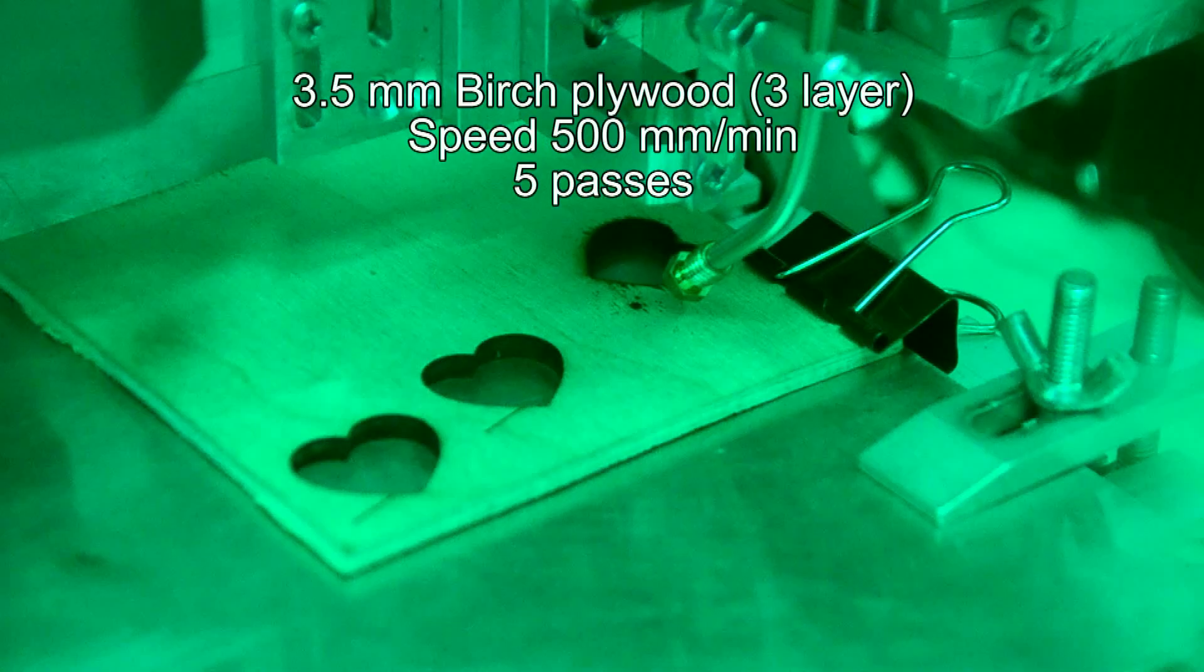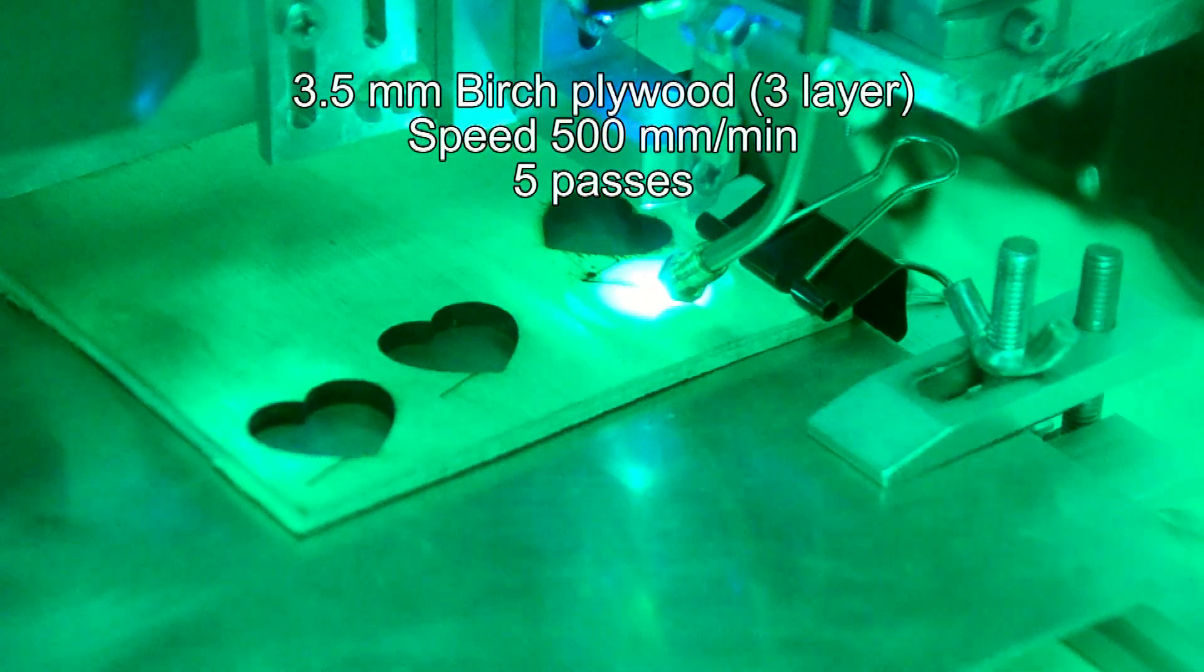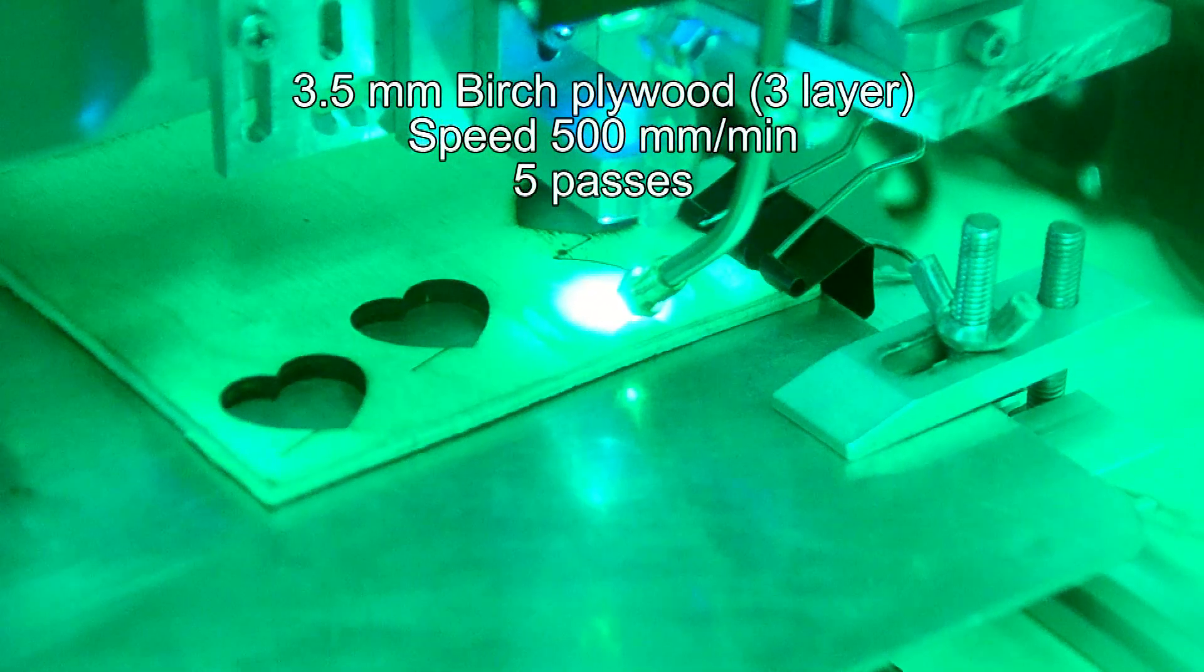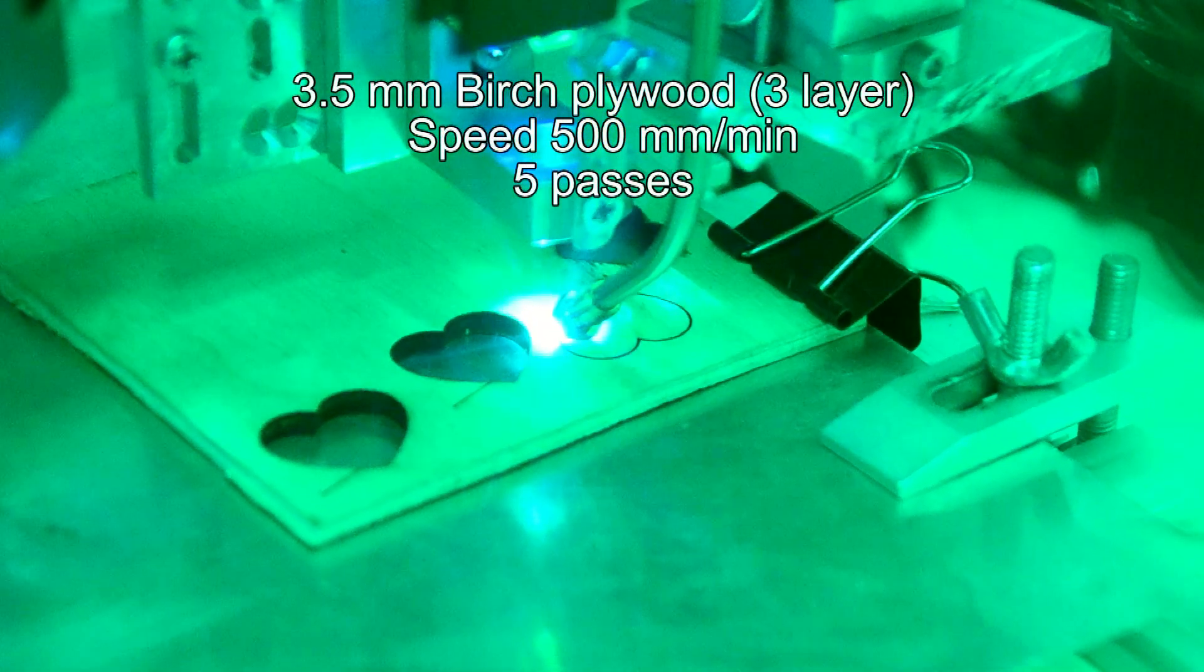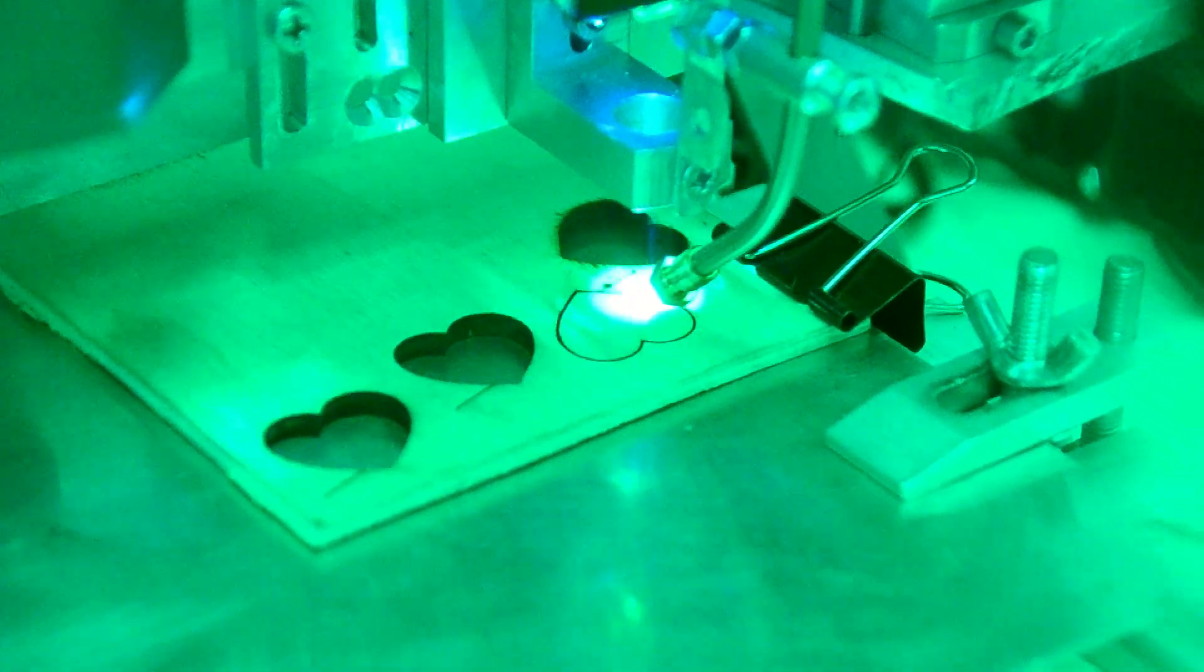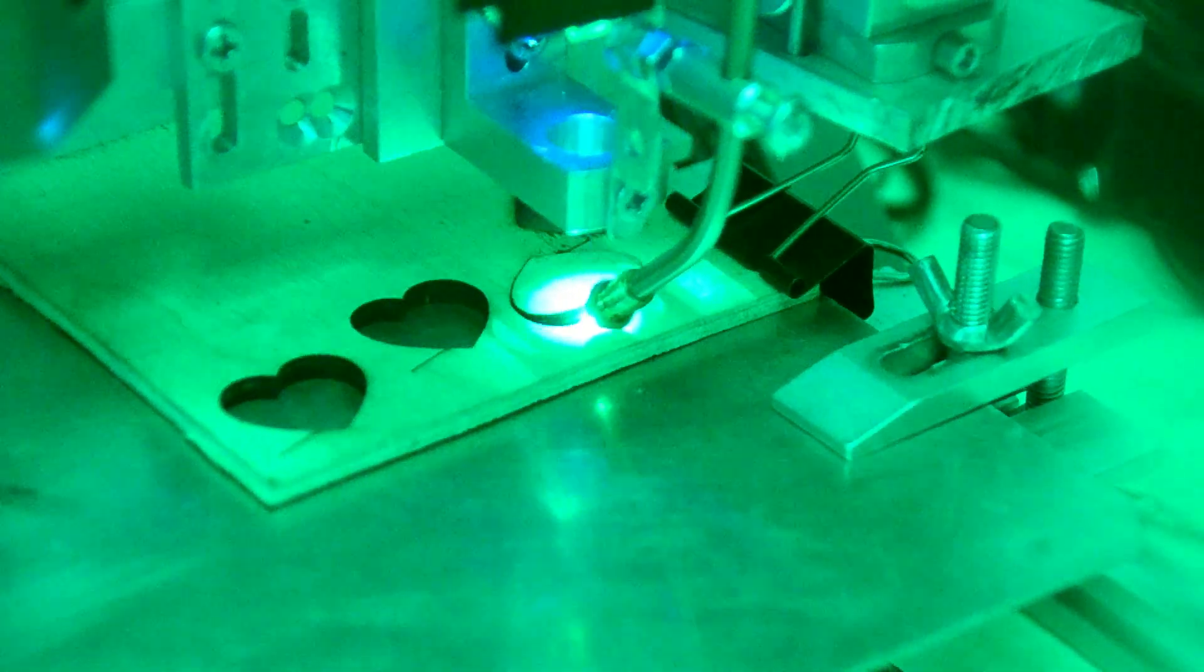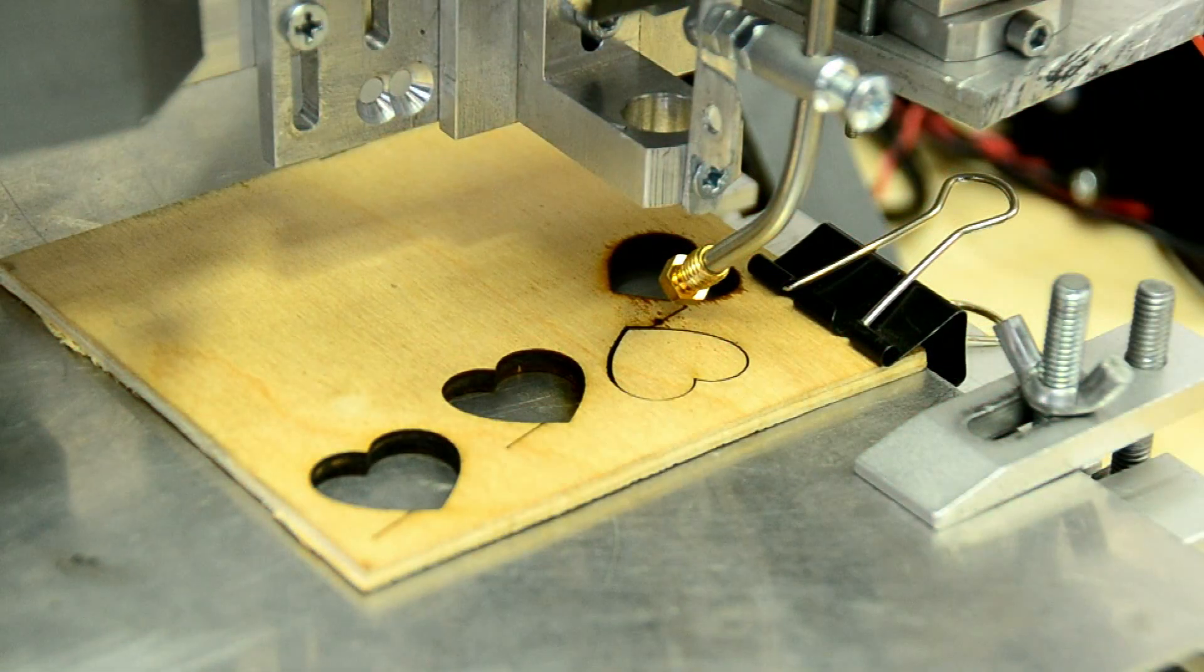Let's do an experiment with 3.5mm birch plywood. I don't really like birch, it is very firm and strong and it's hard to cut even with a saw. But our 15W Dual Laser System can hack it.